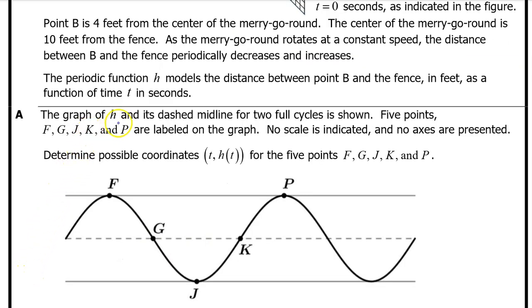Part A. The graph of H and its dashed midline for two full cycles is shown. Five points, F, G, J, K, and P are labeled on the graph. No scale is indicated and no axes are presented. Determine possible coordinates for the five points F, G, J, K, and P.